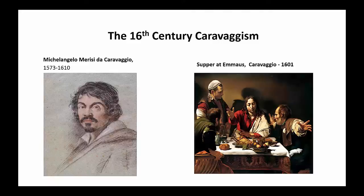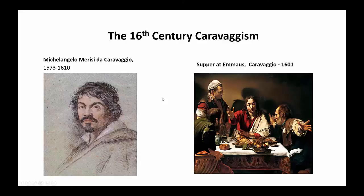The 16th century Caravaggism is about a style of painting developed by the famous artist Michelangelo Merisi da Caravaggio. His style of painting used the contrast of light and dark in a way that vividly revealed the features of the model and the objects. His style was so successful that many artists followed him, and he was considered the most influential artist of his time and one of the founding fathers of modern painting.